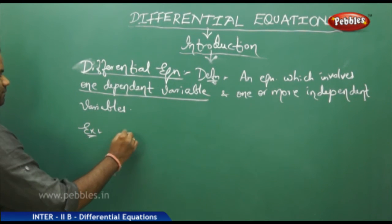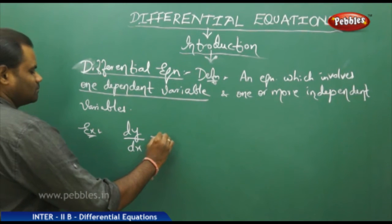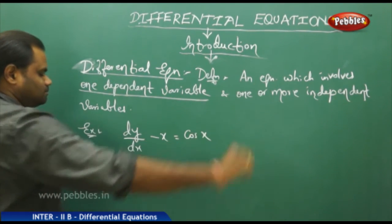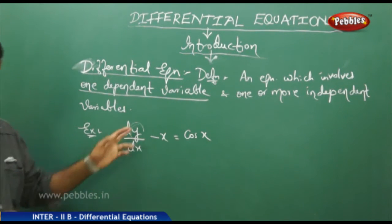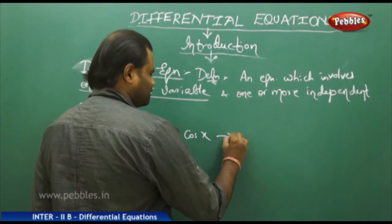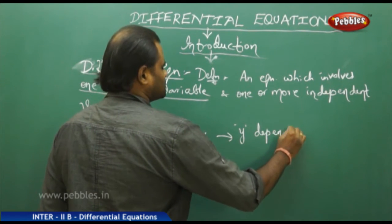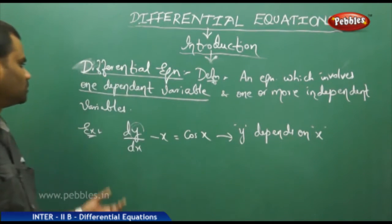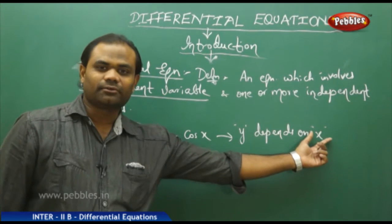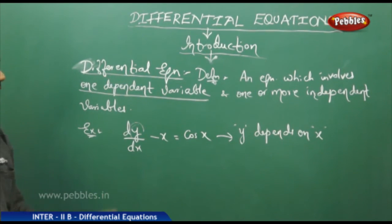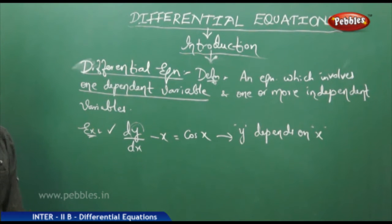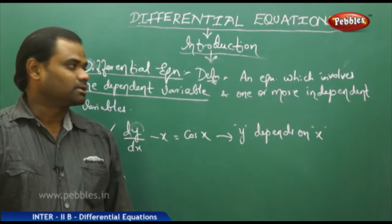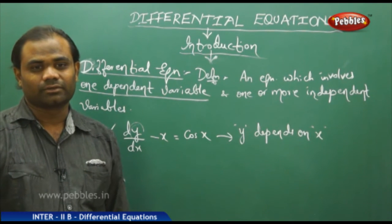For example, I have here a differential equation because y depends on x — that is, the derivative of y with respect to x. Here we have y which depends on x. Therefore, the dependent variable here is y and the independent variable here is x, written in the form of an equation involving derivatives. A differential equation with one dependent variable and one independent variable is the basic mathematical definition.